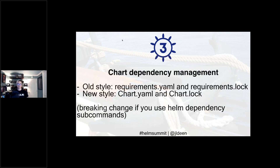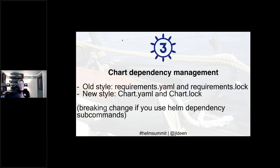Chart dependency management has also received changes. The old style was specifying dependencies in `requirements.yaml` with an associated `requirements.lock` file. `requirements.yaml` is now gone — dependencies are now specified in `chart.yaml` with a `chart.lock` file. If you're using Helm 2 in production with chart dependencies, you're going to want to test this extensively in Helm 3, because there could be breaking changes if you rely on `helm dependency` subcommands as part of your pipeline.